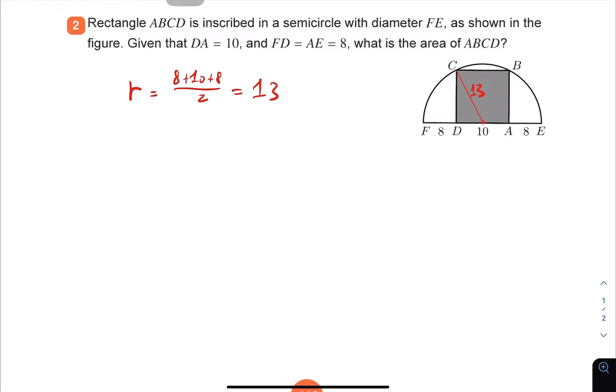The distance from D to the center is 10 divided by 2, which is 5. We can find the length of CD by the Pythagorean theorem, because this is a rectangle. CD squared plus 5 squared equals 13 squared. So CD squared equals 169 minus 25, which is 144.